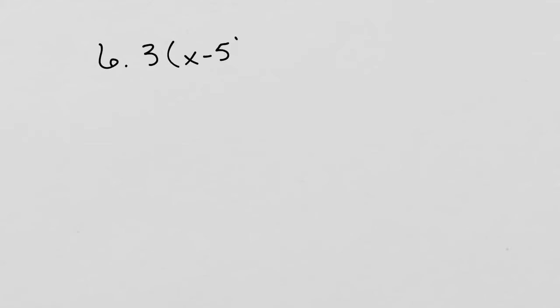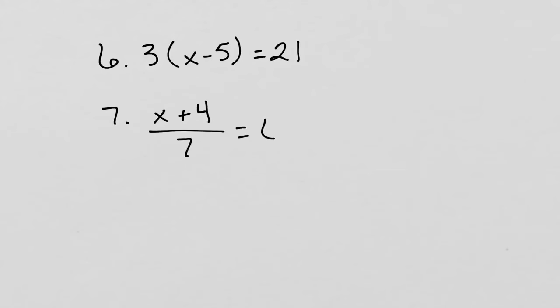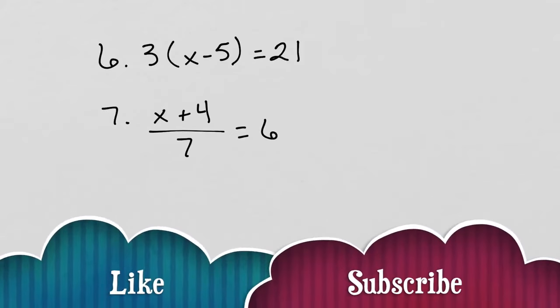Please try these and leave your answers in the comments section. Number 6: 3 times parentheses x minus 5 equals 21. Number 7: x plus 4 all over 7 equals 6. We will end this video here. Please go over it as many times as needed. This topic is just too important. Master the use of the reversal of the order of operation because we will be using it in the next video when we look at multi-step equations and more. Please support this channel by liking this video and subscribing. Have a great day.